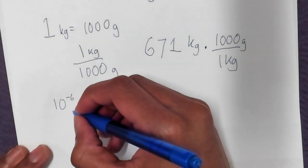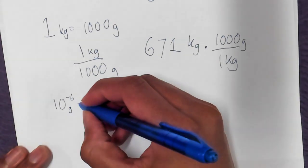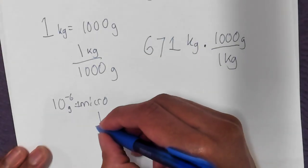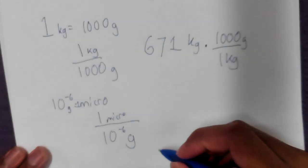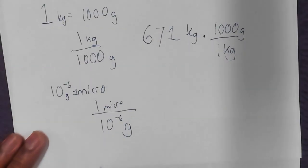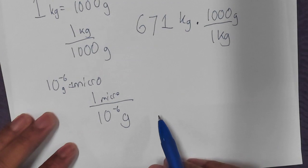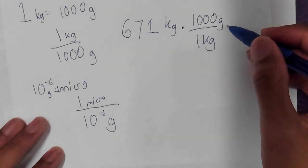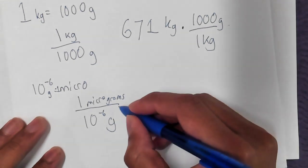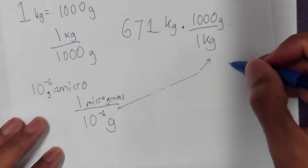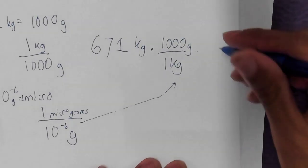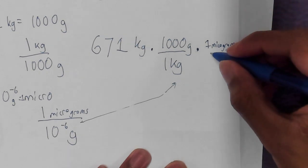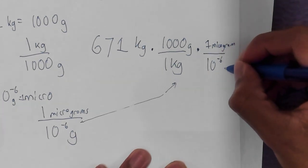So we need to get the conversion unit for grams, the base unit into micrograms. So we'll have another look. Right there it says, where is micro? 10 to the negative 6 micro. Cool. So I'm going to write that down. 10 to the negative 6 micro.